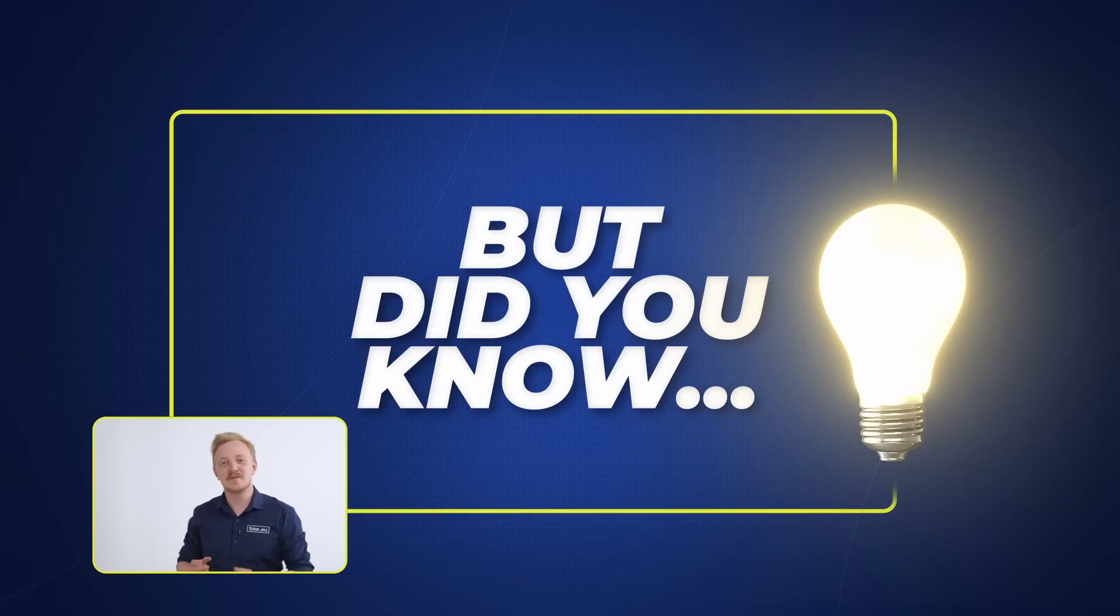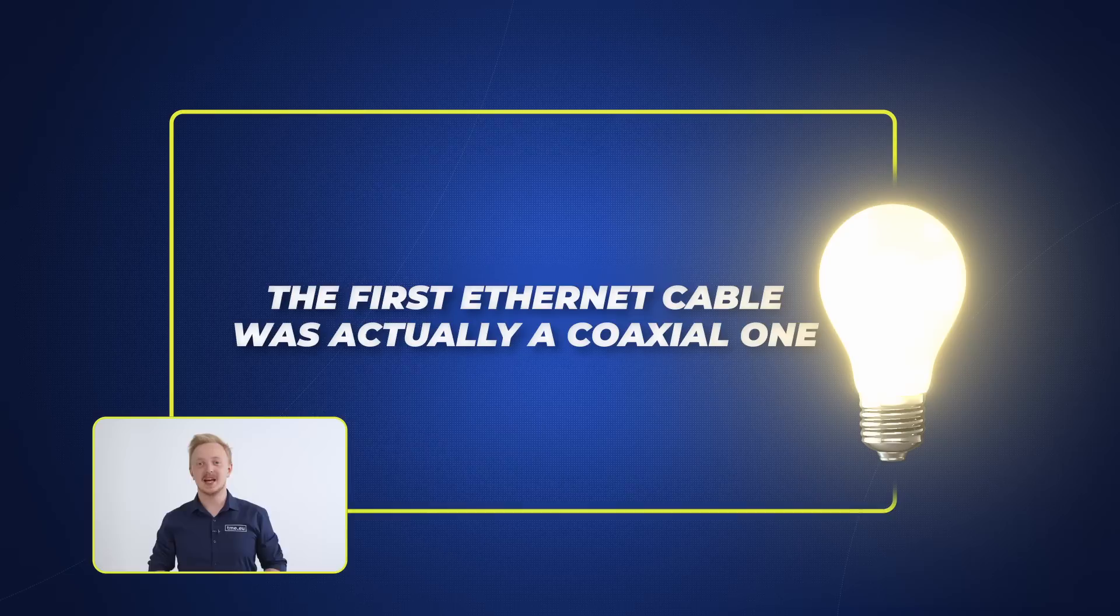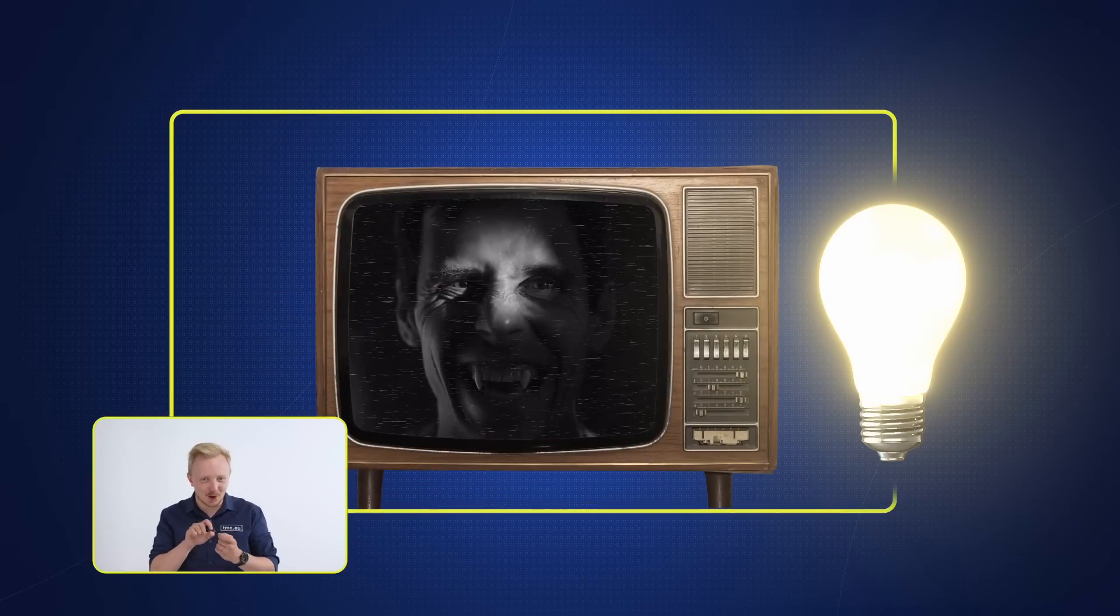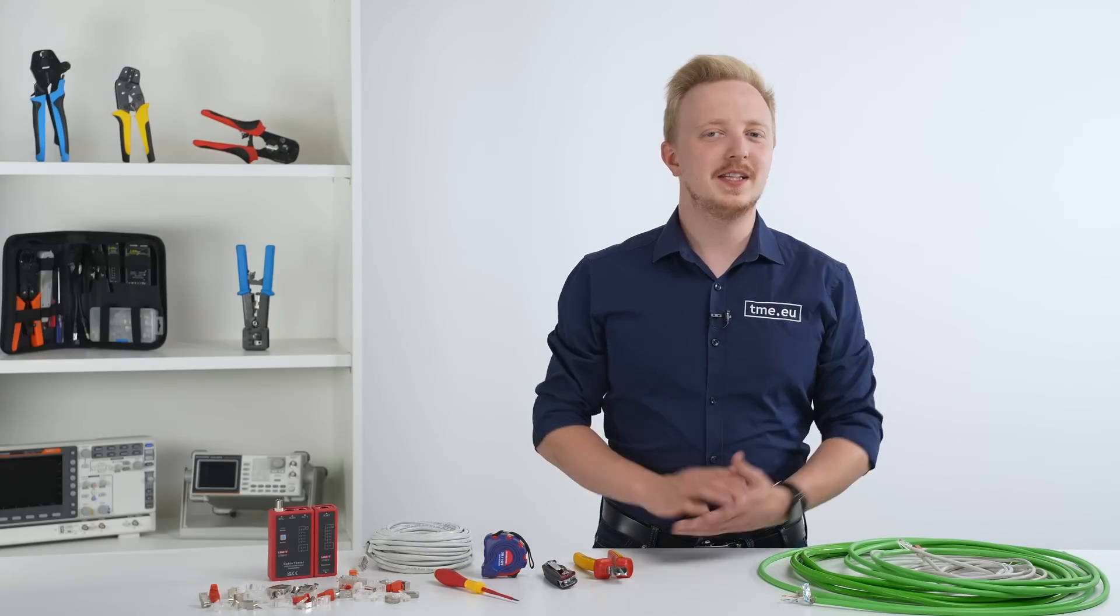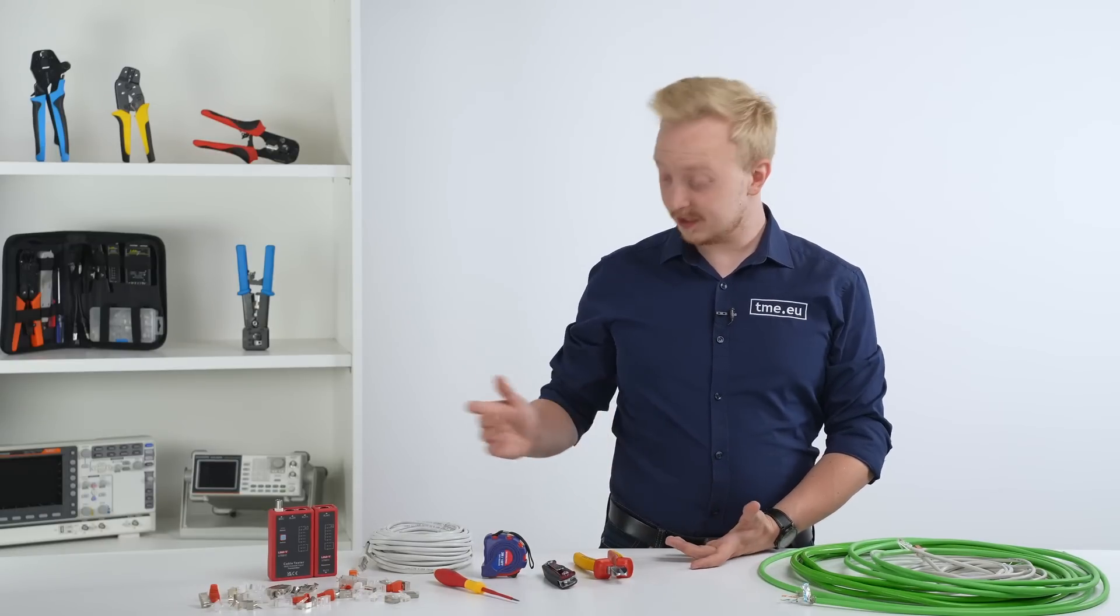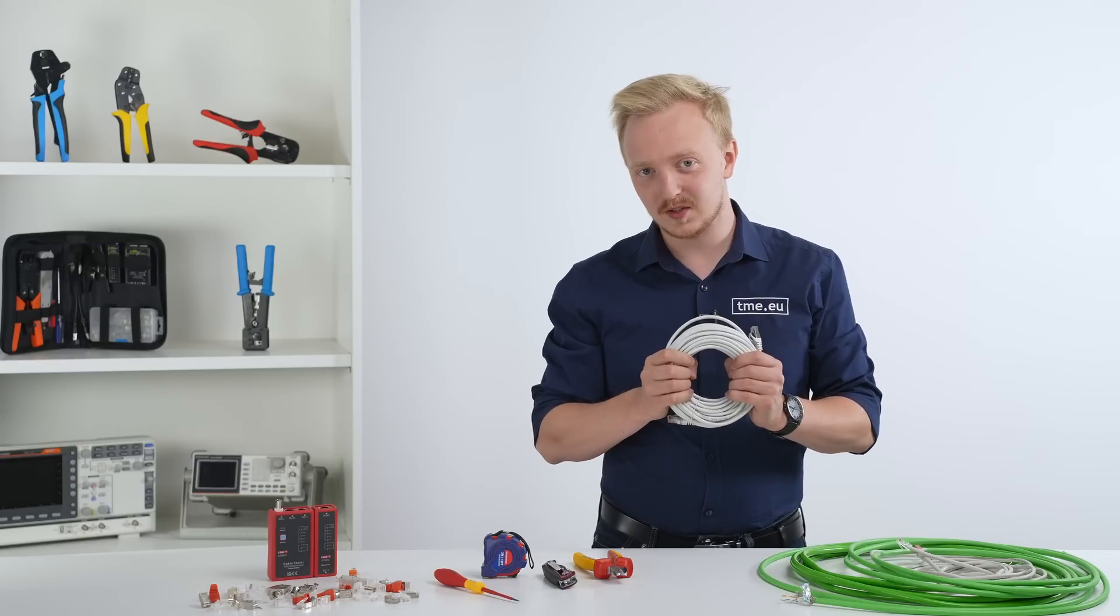By the way, the first Ethernet cable was actually a coaxial one. When they wanted to make a new port, they would just puncture the isolation and get to the core like a vampire. Okay, so now you're ready to order your patch cord because they are just plug and play. But if you want to make one by yourself, you also need a connector.